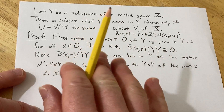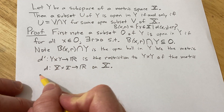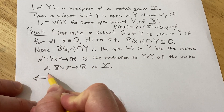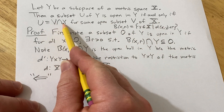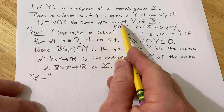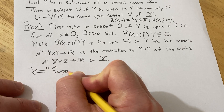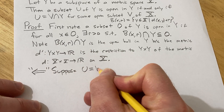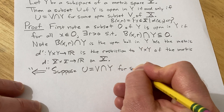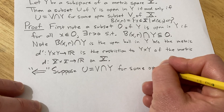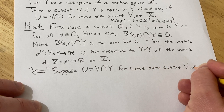Now that that is out of the way we can go ahead and go through the proof. Let's prove this direction first. We're going to assume that U equals V intersect Y for some open subset V of X. Suppose U equals V intersected with Y for some open subset V of X.